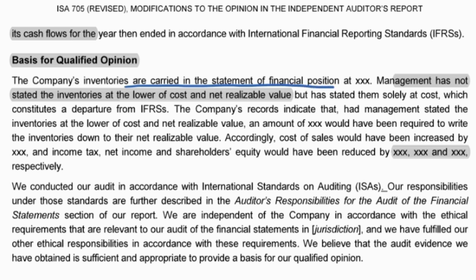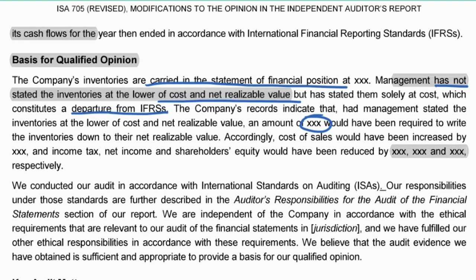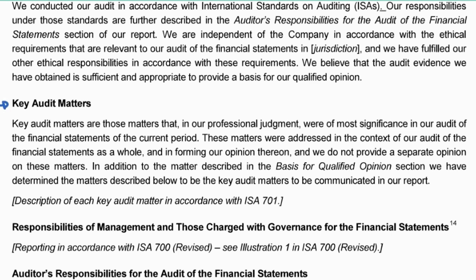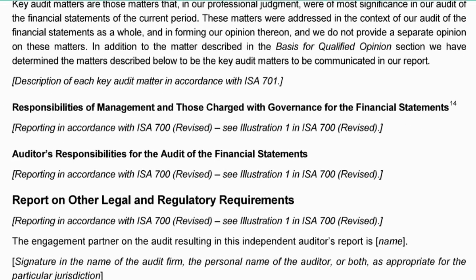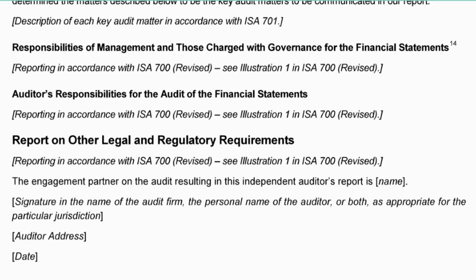In the basis for the qualified opinion, the problem is explained: for example, inventories are carried at a certain amount in the statement of financial position, management has not stated them at the lower of cost or net realisable value, which means they have not complied with IFRS. Then you state what the correct amount should have been. This is followed by key audit matters, management's responsibilities, auditor's responsibilities, and any report on other legal or regulatory requirements such as non-compliance with specific legislation.